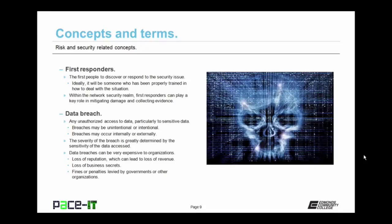The severity of the breach is greatly determined by the sensitivity and the quantity of the data that's been accessed. Data breaches can be very expensive to organizations. They can result in a loss of reputation, which can lead to a loss of revenue. When it became known that Target lost sensitive customer information — credit card information — people became unwilling or uncomfortable with shopping at Target. Even though they quickly fixed the breach, the results lingered on. A data breach may result in a loss of business secrets, which may cost that organization a competitive advantage. Data breaches may also result in fines or penalties levied by governments or other organizations.